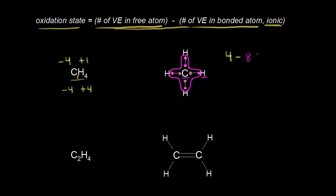So four minus eight equals minus four — carbon has an oxidation state of minus four in methane, which confirms what we calculated using the general chemistry approach.